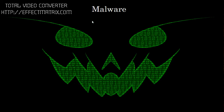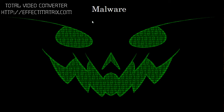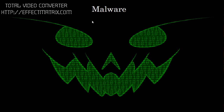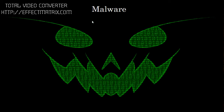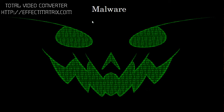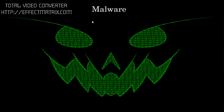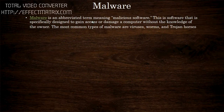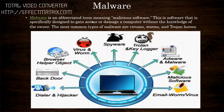In the market there are different types of malware programs. The most common types are virus, worm, Trojan, and Trojan horse. Today we are going to discuss those types of malware programs and what they actually do.